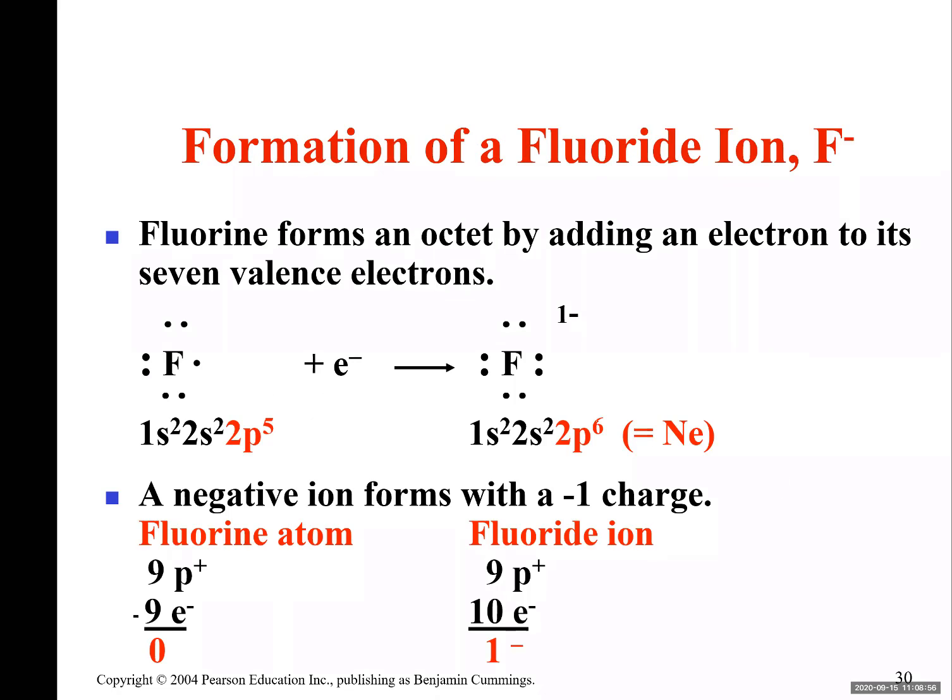We needed to write the electron configuration of atoms to understand their property. This is the electron configuration of atoms. Today we are going to look at the fact that the number of electrons in the outermost shell are very important in defining properties of substances.